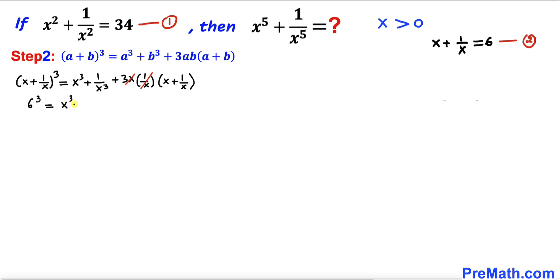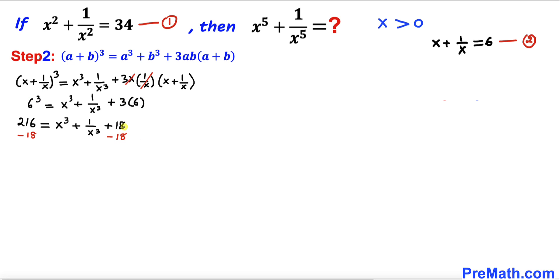So 6³ = x³ + 1/x³ + 3·6. Since 6³ = 216 and 3·6 = 18, subtracting 18 from both sides gives x³ + 1/x³ = 216 − 18 = 198. Let's call this equation number three.